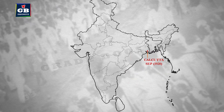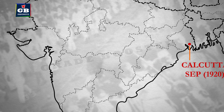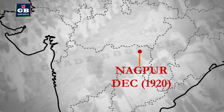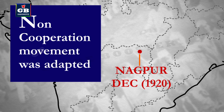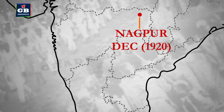Next we locate the Nagpur session, held in December 1920. Nagpur is in Maharashtra, located at the corner of Madhya Pradesh and Chhattisgarh — more or less at the center of the map. During the Nagpur session, many members of Congress doubted the implementation of the non-cooperation movement, but Gandhiji convinced everyone and the non-cooperation movement was adopted.